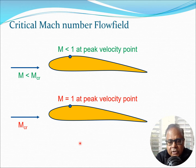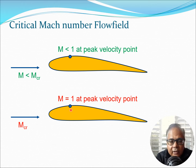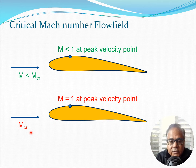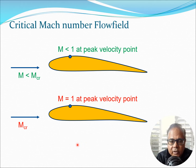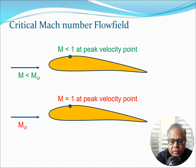M_critical can be something like 0.7, substantially below 1, yet at the peak point on the airfoil you encounter Mach 1. This is because air expands on the top surface, picks up speed, and achieves a higher local Mach number, even though the freestream is flying at much lower than sonic speed.